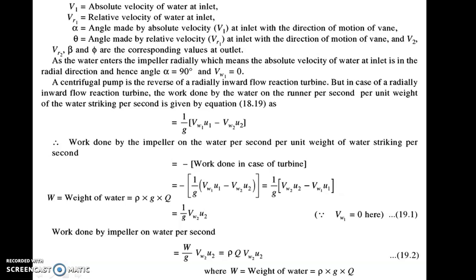The impeller power is given by the formula Rho Q into Vw2 U2. For a pump, the input power is shaft power which is supplied by the electric motor, so electrical energy is the input power or shaft power. Then after shaft power there is impeller power, which is the work done by the impeller on the water, given by Rho Q into Vw2 U2. In terms of head, it will be given by Vw2 U2 upon G.